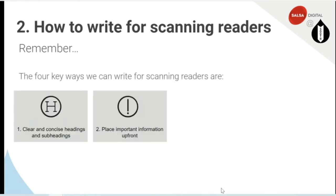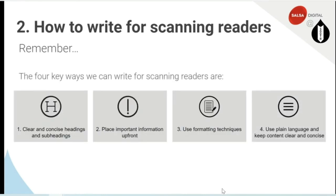Remember our four ways. Next time you're sitting down to write something: use clear and concise headings and subheadings — four to six words long, keywords at the front if possible; place the important information up front — think of that inverted pyramid; use formatting techniques — bolding, lists, headings and subheadings, and designs that have chunks; and use plain language to keep content clear and concise — simpler words, shorter sentences.